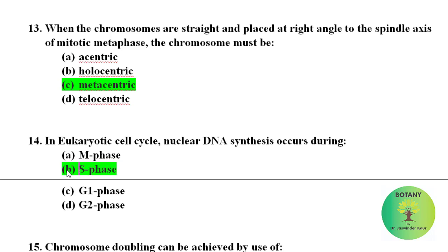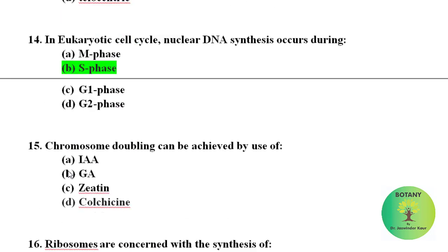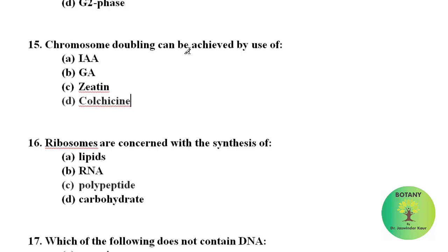Chromosome doubling can be achieved by use of colchicine. With colchicine treatment, chromosomes can be doubled. Ribosomes are concerned with the synthesis of polypeptides or the protein synthesis.